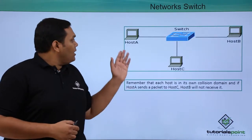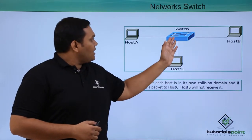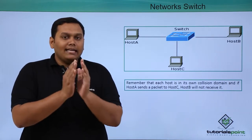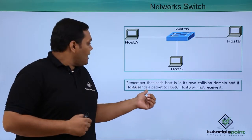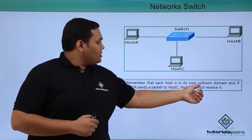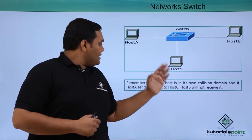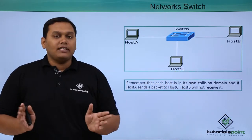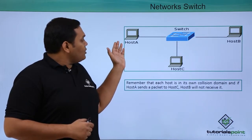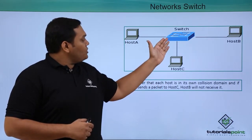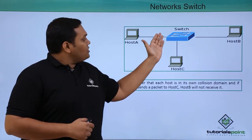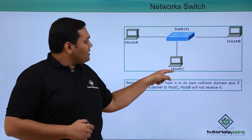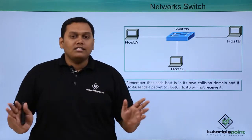You can see a simple diagram here: Host A, Host B, and Host C are connected through a switch. The switch breaks up the collision domain and each host is in its own collision domain. If Host A sends a data packet to Host C, Host B will not receive the data. The switch sends the data to the destination port, and only Host C will receive it.